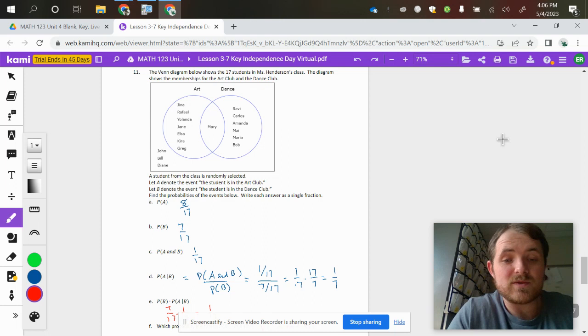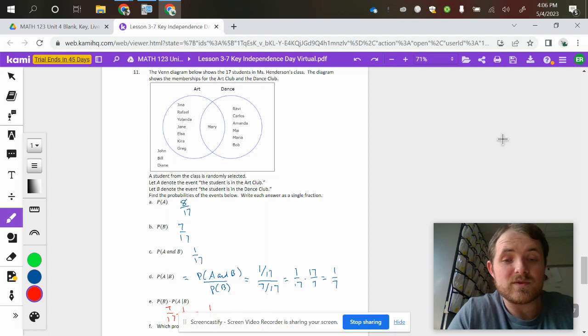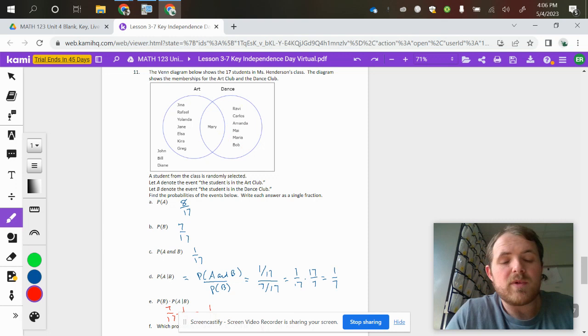The probability of B, that they're in dance class, would be these 6 people: 1, 2, 3, 4, 5, 6, but then we also can include Mary because even though she's in art, she's also in dance.